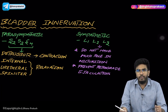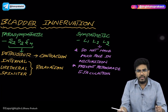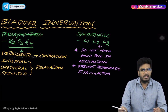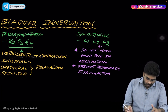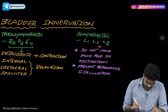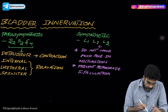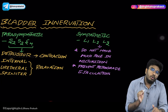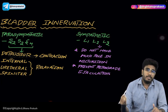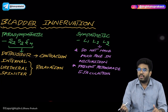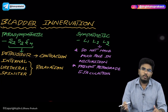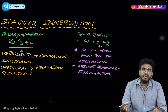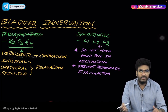Welcome back. In this video, let's discuss bladder innervation, micturition reflex, and important points about the cystometrogram. Your bladder is innervated by both parasympathetic and sympathetic neurons. Most body organs are innervated by both parasympathetic and sympathetic nerve fibers.